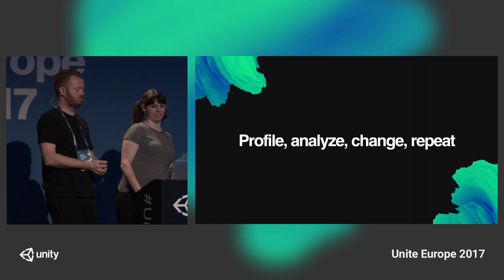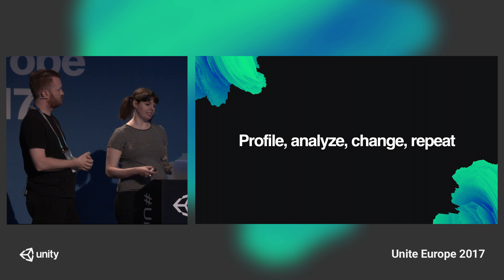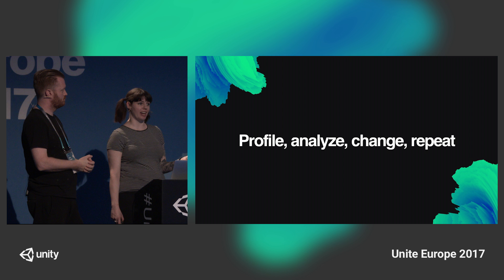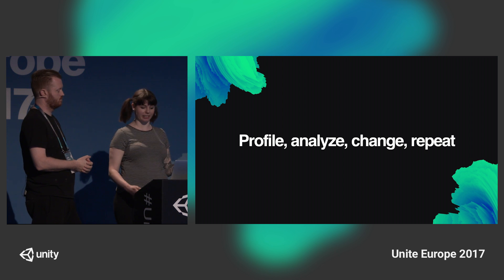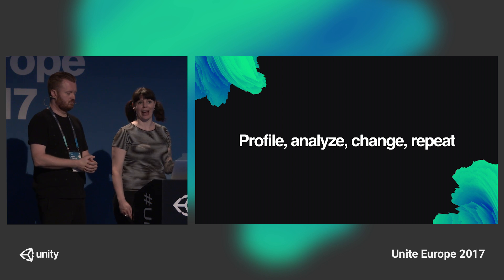We've said what you need to do every time is profile, analyze, make a change, and then repeat that process. Let's talk about how you actually do this. Profiling is the name for the process of measuring aspects of our game's performance at runtime. Unity has a few built-in profiling tools. Today we're just looking at one — the profiler window. You can open this in Unity using the top menu bar: just go to Window > Profiler.